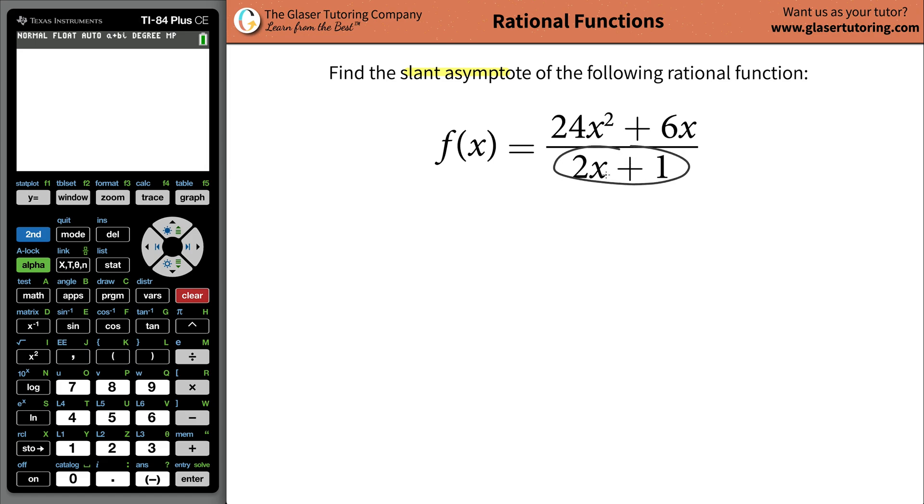Just because the denominator, synthetic division works well when you have a power of 1 in your denominator, but if this becomes x squared, well, the general rules of synthetic division go out the window. So let's just do this with long division, so we're going to set it up.